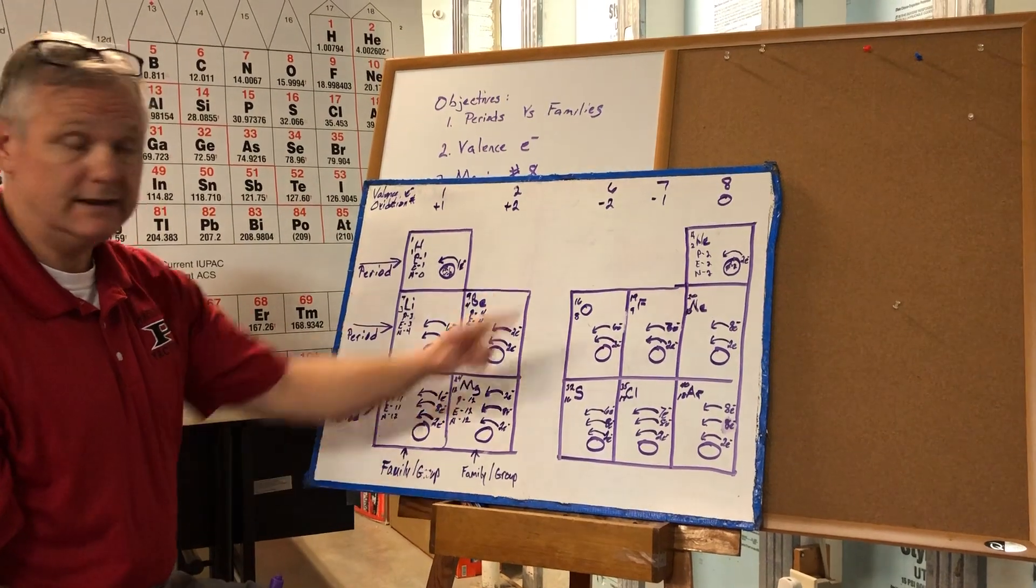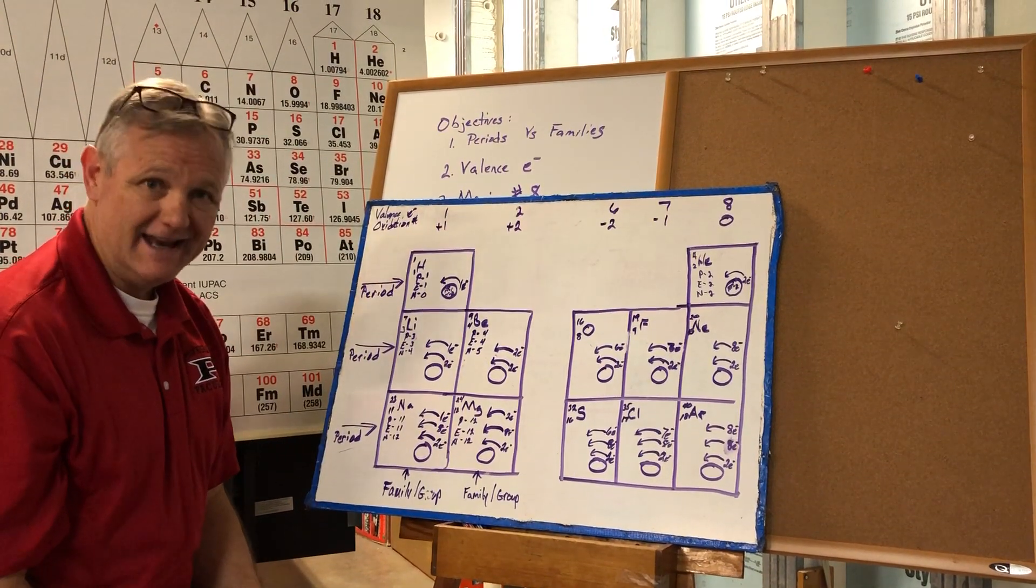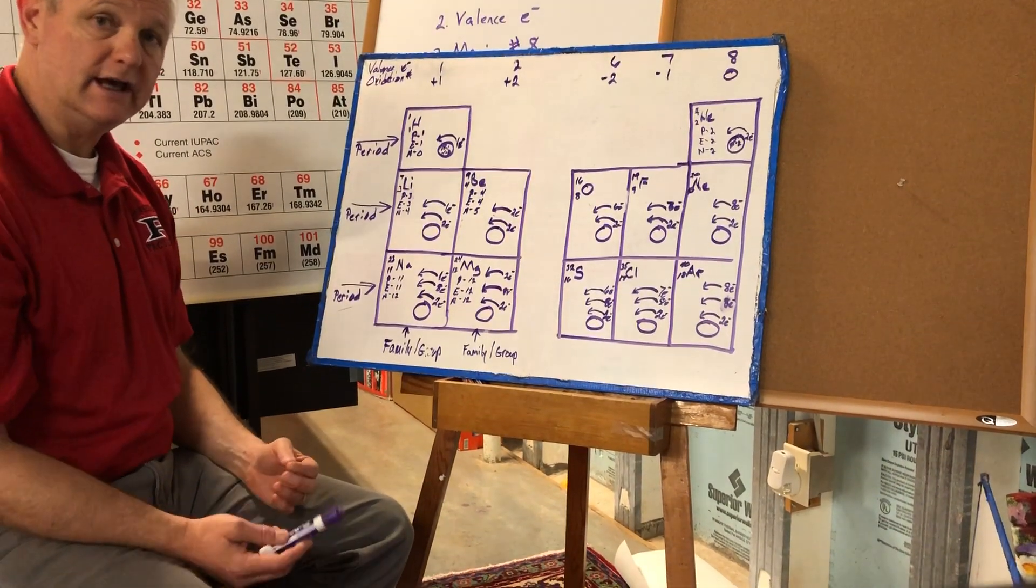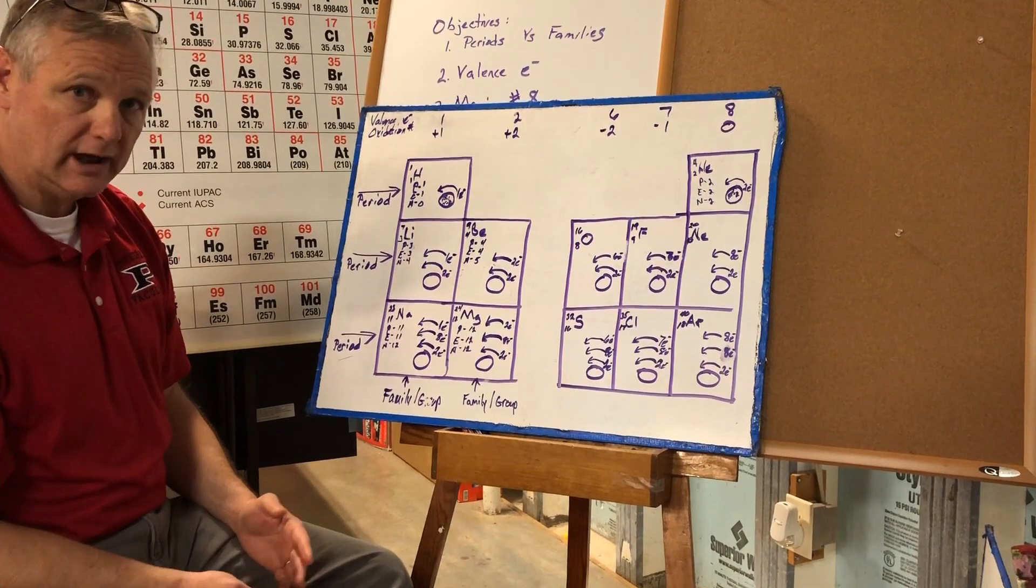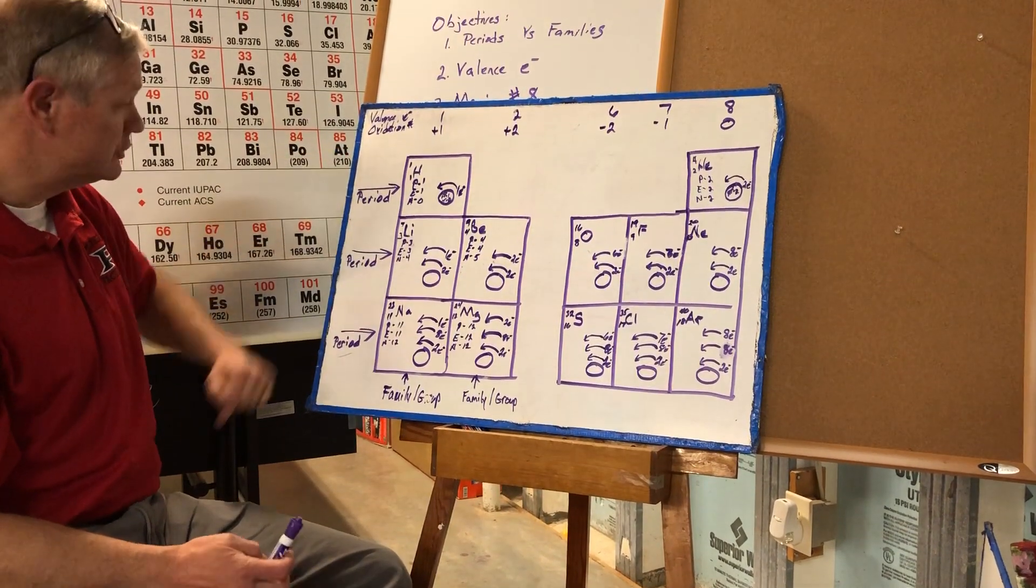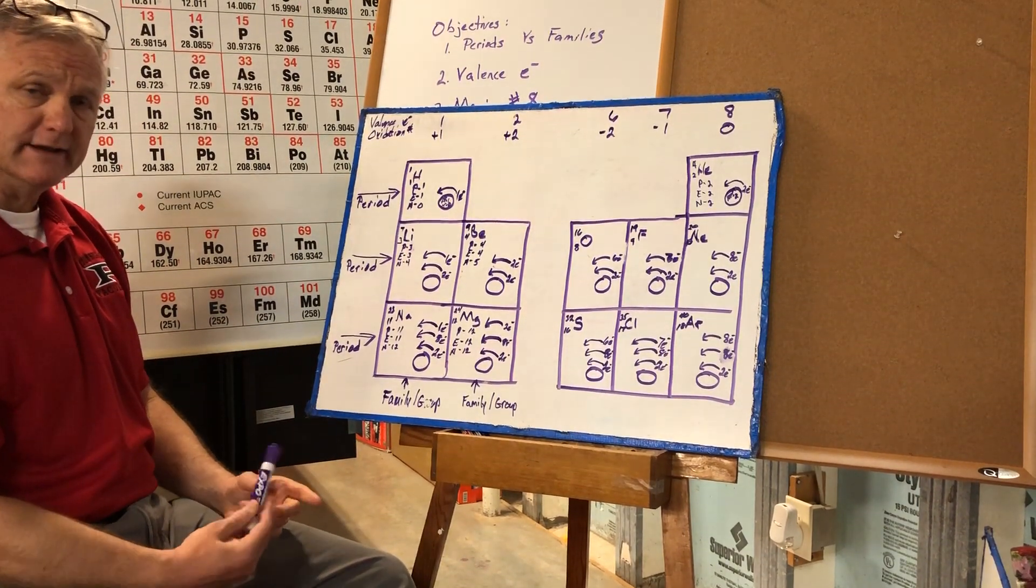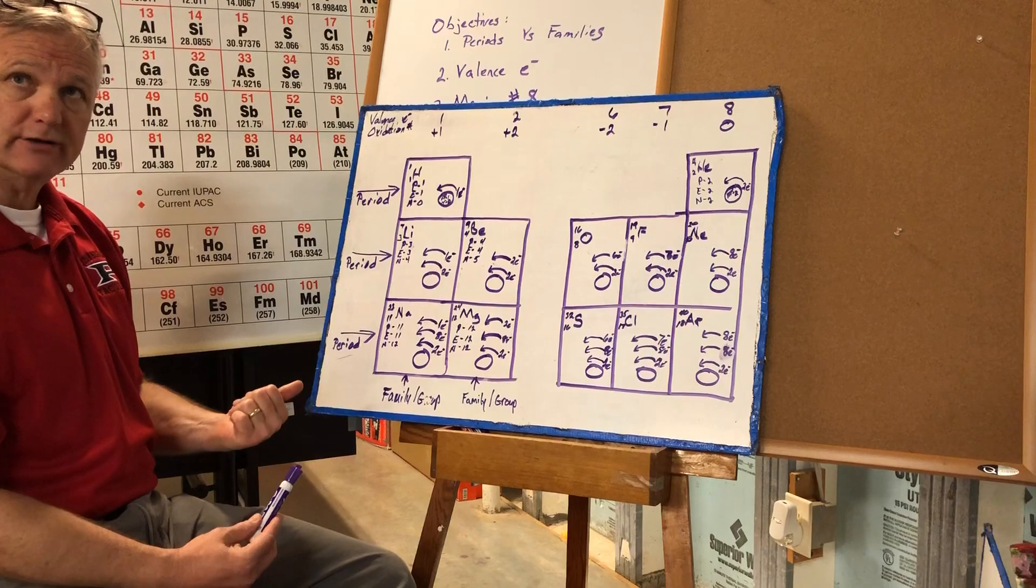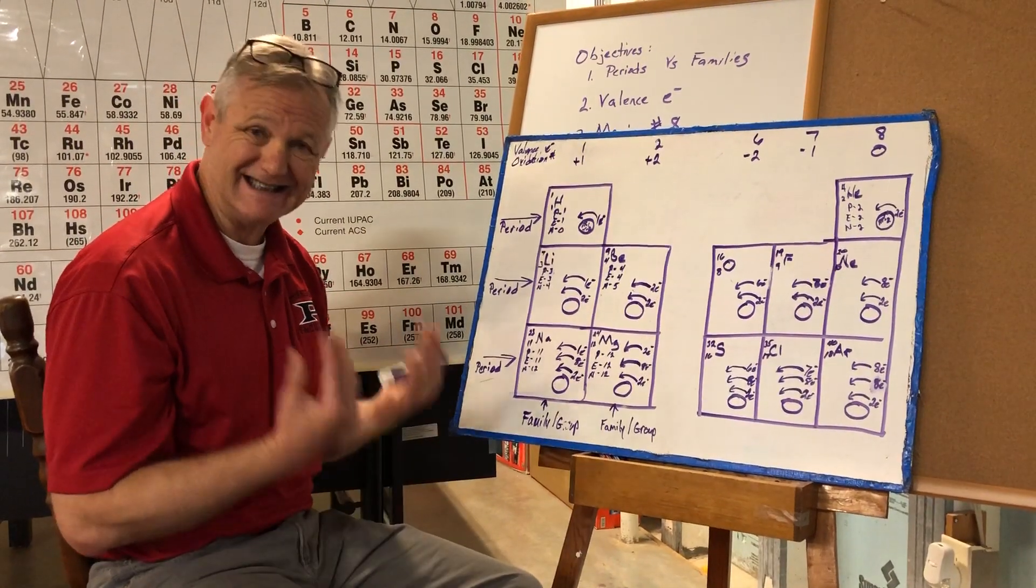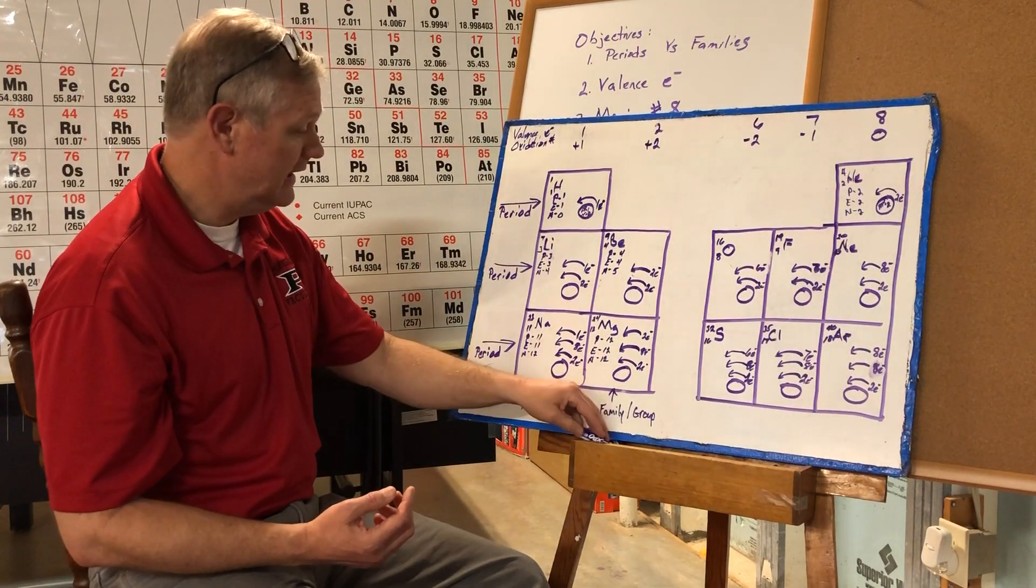So what that means when we start looking at the magic number of eight, that is it, the most stable form. So what we're going to try to do is to either gain or lose electrons to reach that magic number of eight. So if I look at the amount of energy that is required to lose an electron, or the amount of energy required to gain an electron, the amount of energy is exactly the same. So if I look at lithium, lithium has one valence electron.